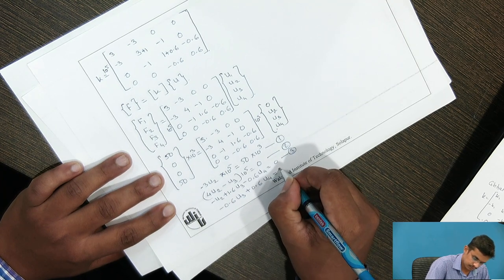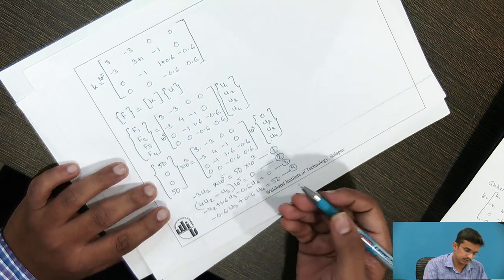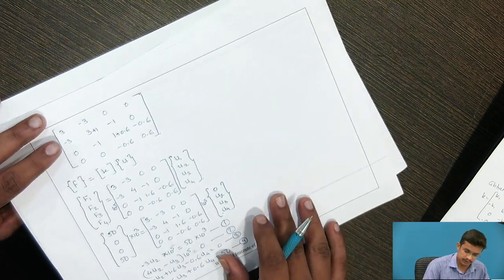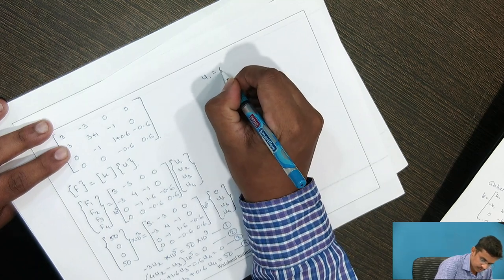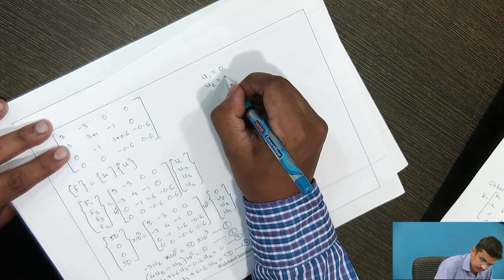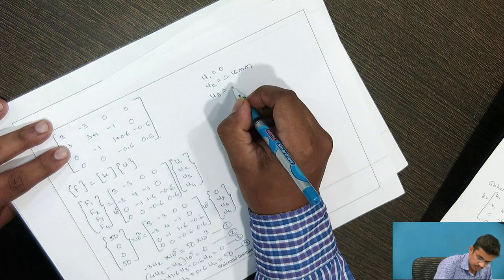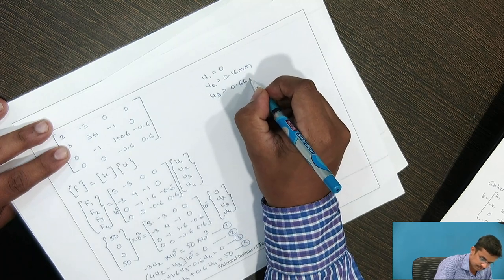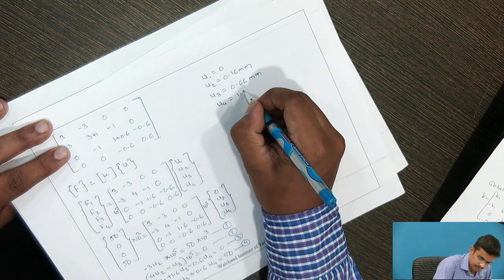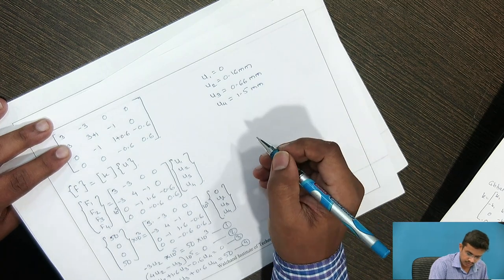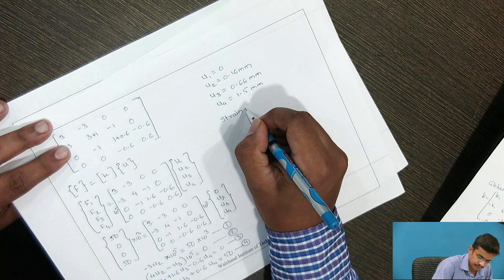Solving the simultaneous equations using a calculator: U1 = 0, U2 = 0.16 mm, U3 = 0.66 mm, and U4 = 1.5 mm.